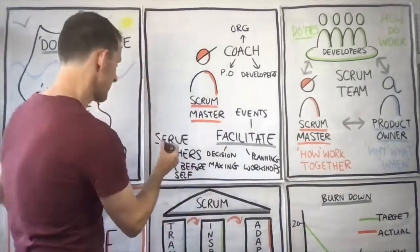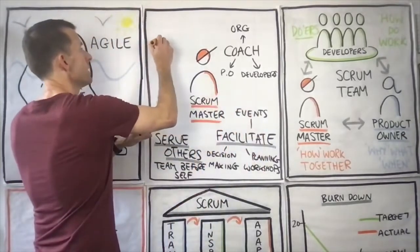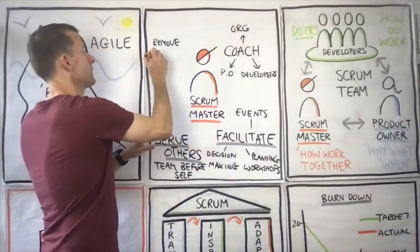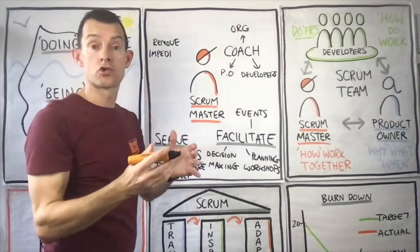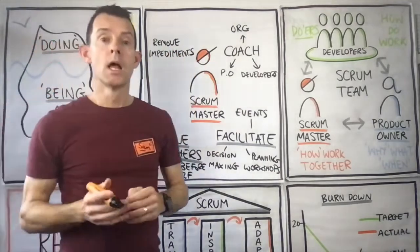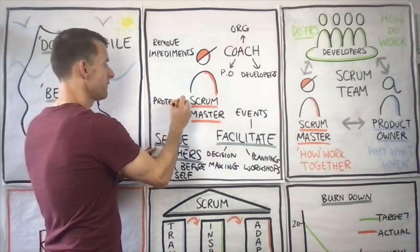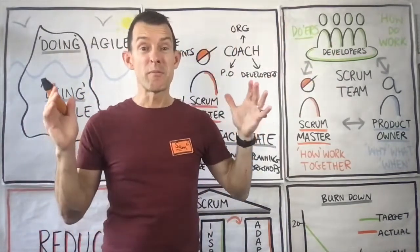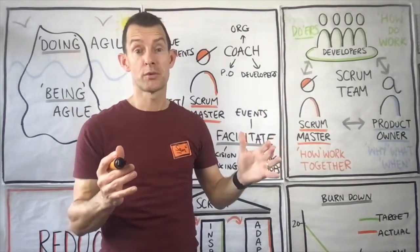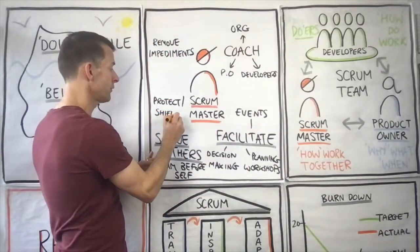A couple more things the Scrum Master does: you may have heard that they remove impediments. Some impediments the developers can solve themselves, but especially things beyond the Scrum team's control, the Scrum Master will take on. They also help protect and shield the team from distractions, creating an environment where the team can be in flow — that state where work is timeless and you feel so focused that you do amazing work together.